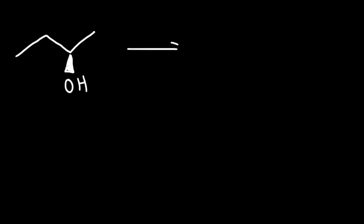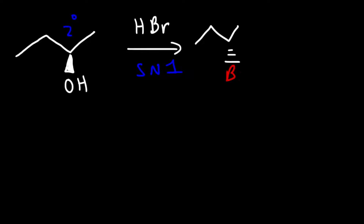Now let's discuss the stereochemistry of these reactions. If we react 2-butanol with hydrobromic acid, this will occur by an SN1 mechanism since we have a secondary alcohol. We get a racemic mixture of products — the bromine atom can be on the dash or on the wedge, and we get both stereoisomers.